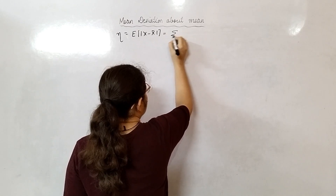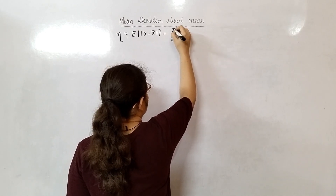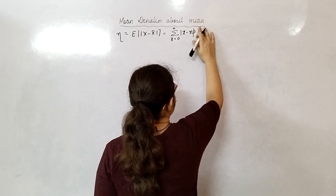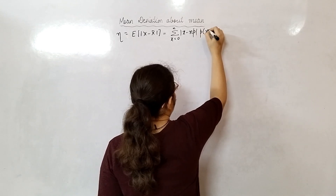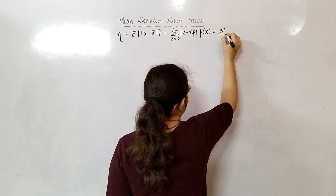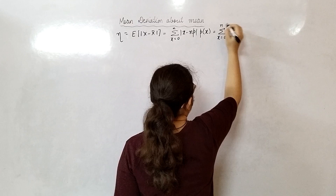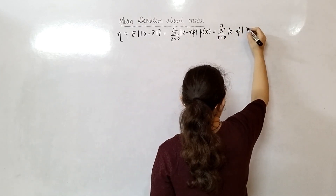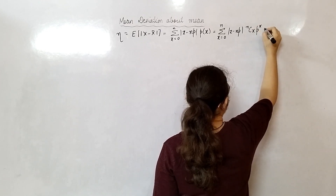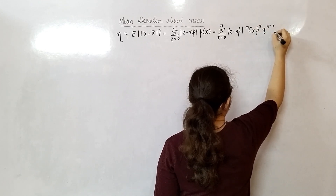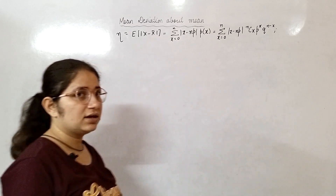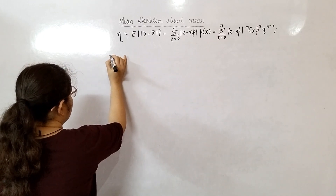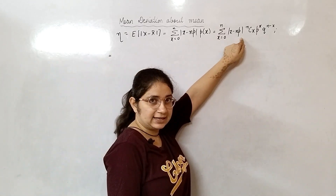How will you open it? Summation x from 0 to n of |x minus np|, where np is the mean of binomial distribution, times probability of x. It will be summation x from 0 to n of |x minus np| times nCx · p^x · q^(n−x), where p + q = 1. Now I can open |x minus np|.